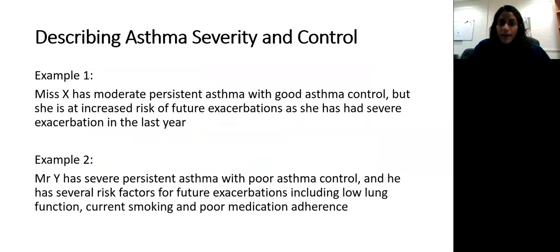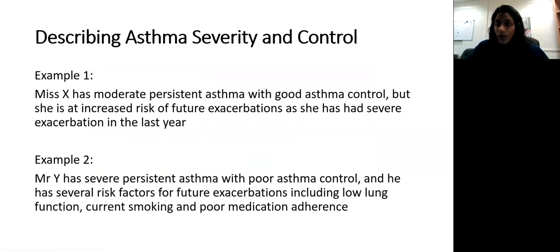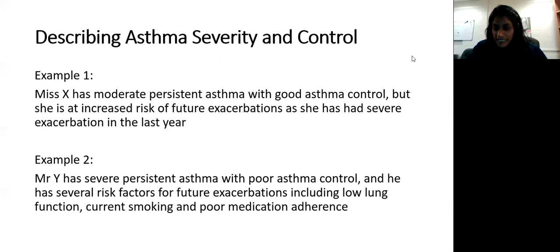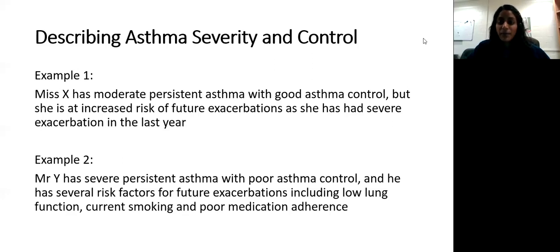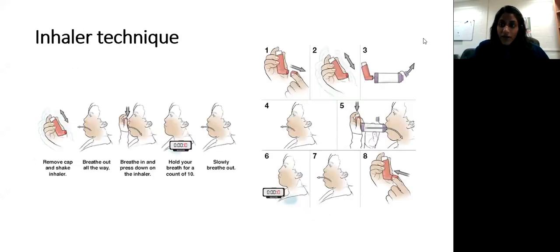When documenting asthma severity and control, combine both elements — for example: 'moderate persistent asthma with good asthma control but increased risk of future exacerbations due to prior exacerbations,' or 'severe persistent asthma with poor asthma control and several risk factors including reduced FEV1, current smoker, and poor medication adherence.' This helps identify patients at higher risk and those who may need referral. Importantly, 80% of patients don't know how to use their inhalers appropriately.